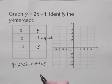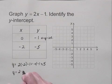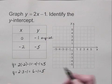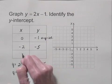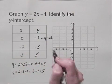And let's let x be 3. When x is 3, I have 2 times 3 minus 1, which is 6 minus 1, or 5. So that gives me the point 3, 5 on the line.